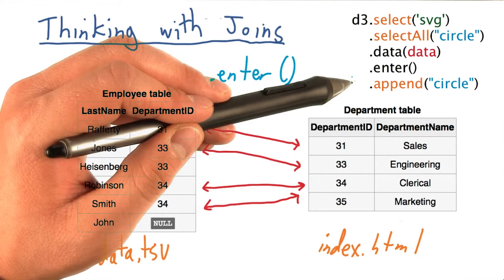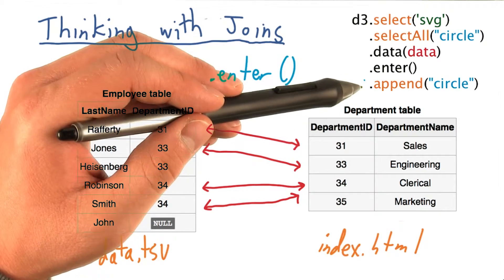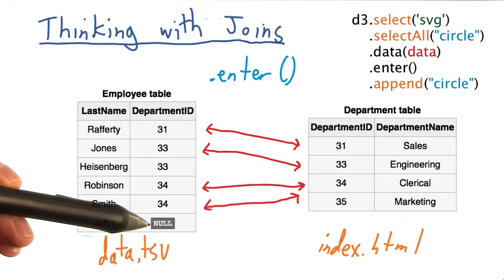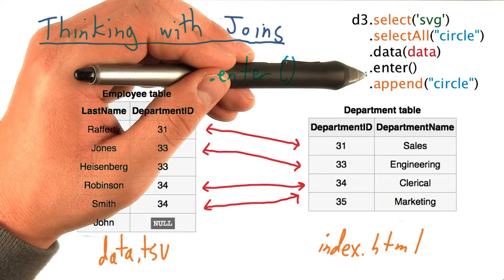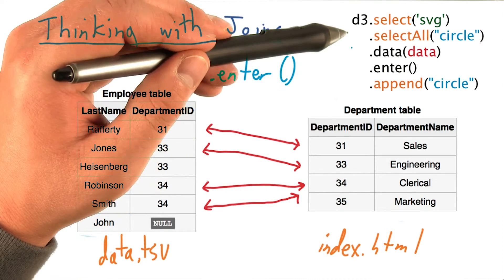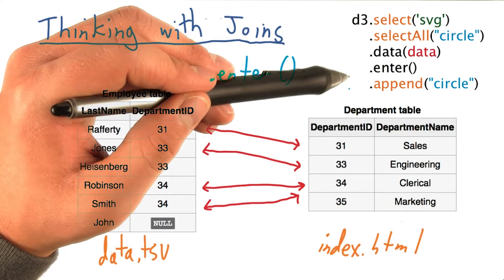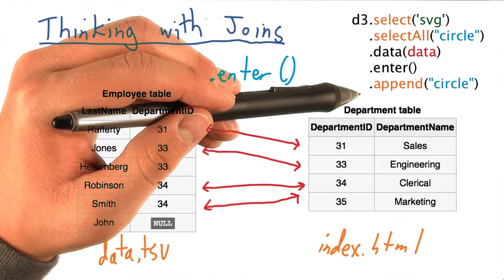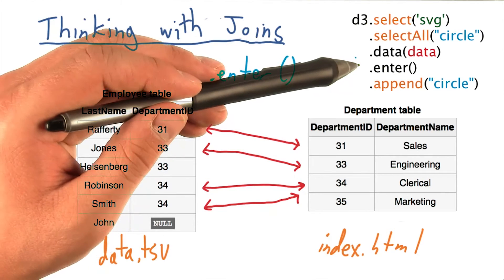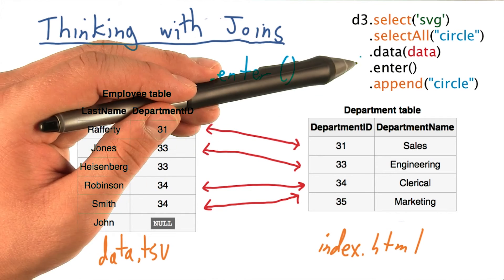Now if we wanted to rerun this code without changing the data or our selections, nothing will happen. Since the data never changed, the key of the bound data never changed. So our enter selection, which corresponds to all the new elements to draw on the page, will simply be empty, and we don't append anything new. In theory, we could run this line of code 100 times and our chart won't change as long as our data and selections don't change. This is one of the strengths of the declarative syntax — it allows us to build complex animations where only some elements of our data or web page actually change from one frame to the next.